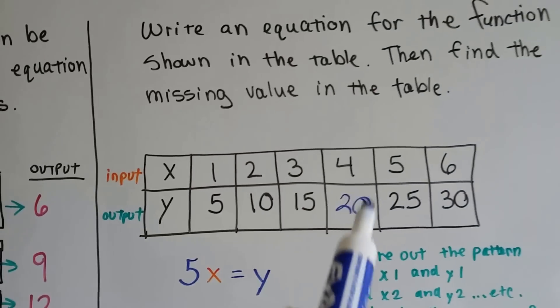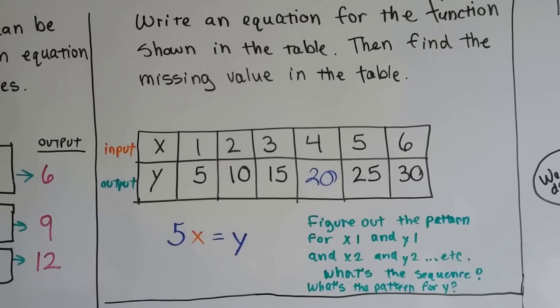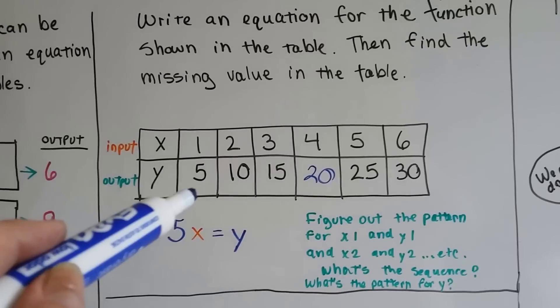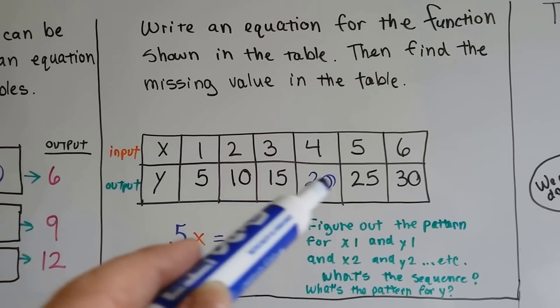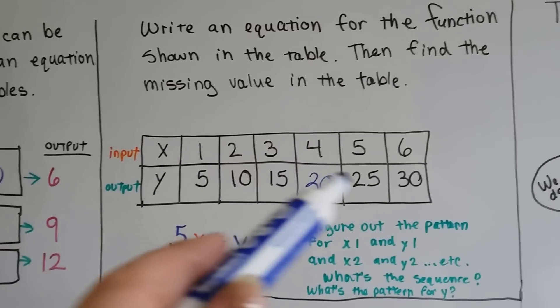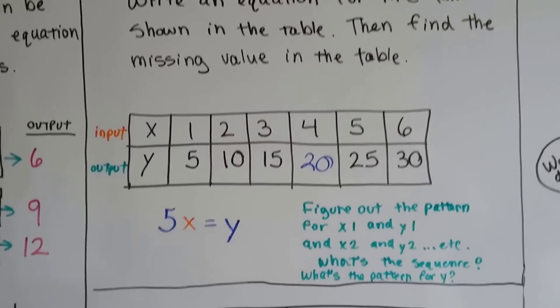And then it goes 5, 10, 15, 20, 25, 30. It fits. So you figure out the pattern for x1 and y1, and x2 and y2, and you look at the pattern that's happening with y, and then you can figure out the missing one.